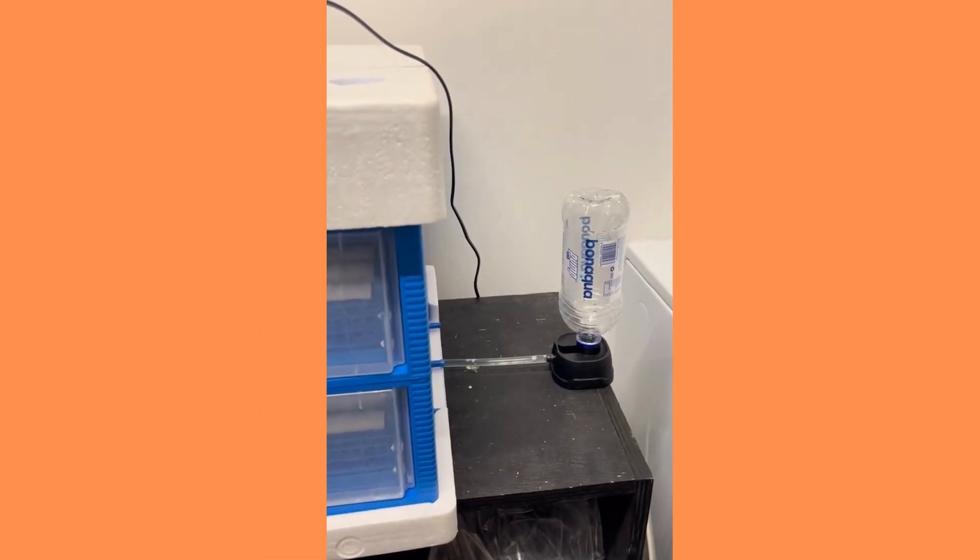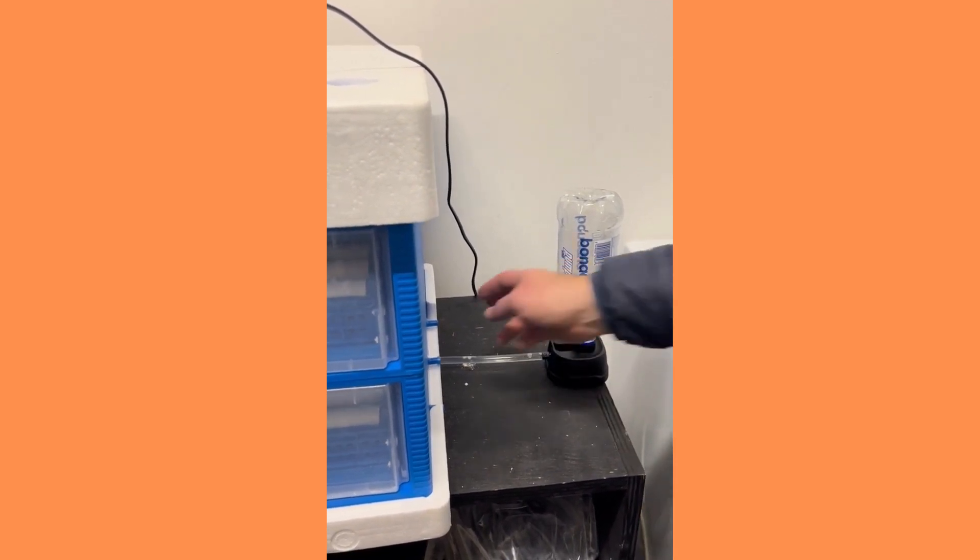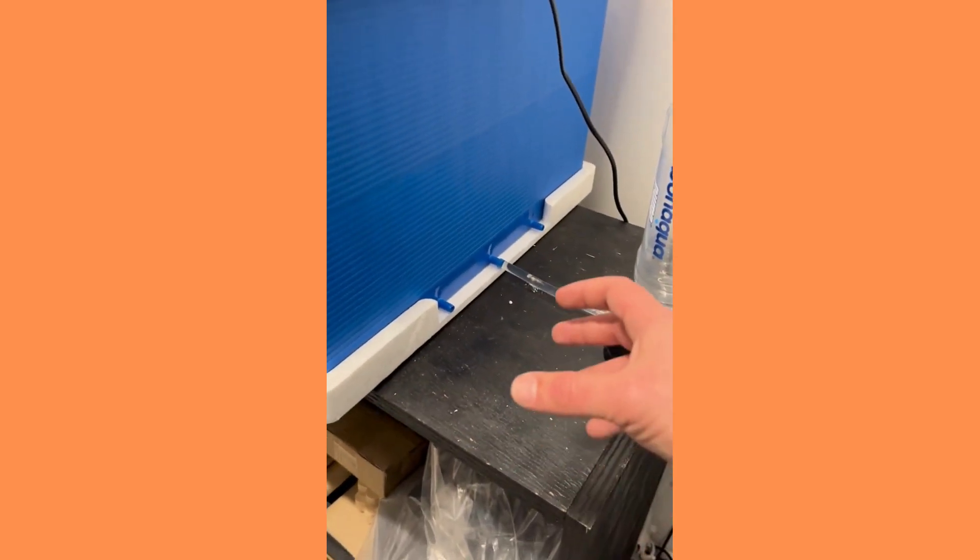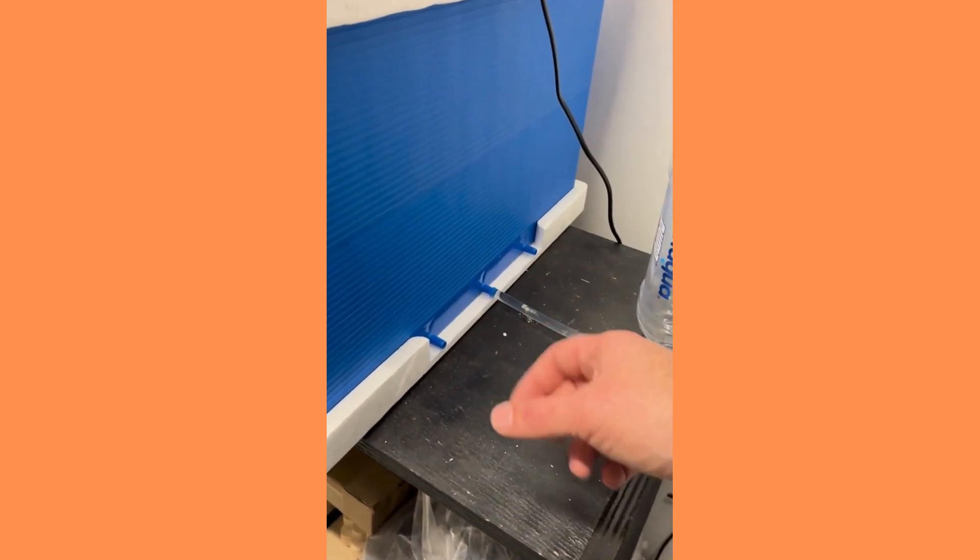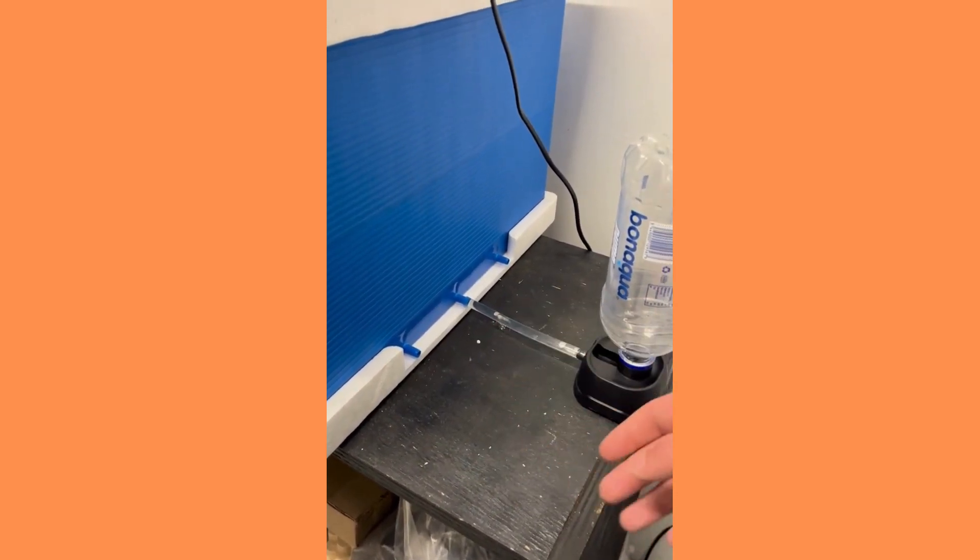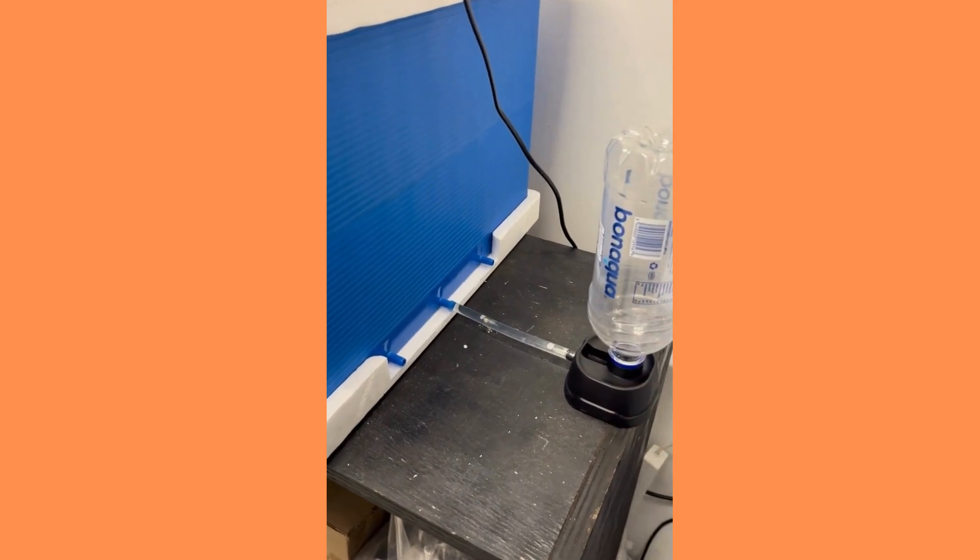Next we're going to talk about the humidity controller on this machine. You'll see we've got three little ports here on the side. There's three compartments in the base of the machine and each port goes to one compartment. We do that to control the humidity.